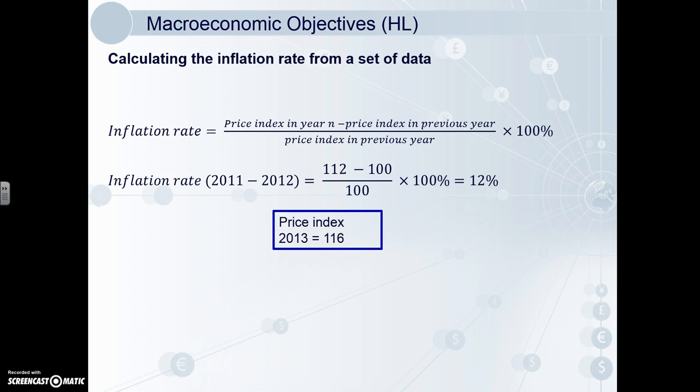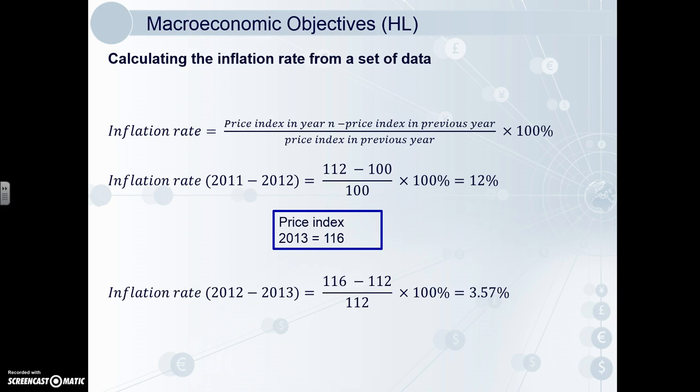Now let's add the weighted price index from 2013 — say it's 160. We'll find the inflation rate from 2012 to 2013. Plugging the numbers in: 116 minus 112, over 112, times 100%, comes out to 3.57%. For examples like these, you will need to remember the equation.